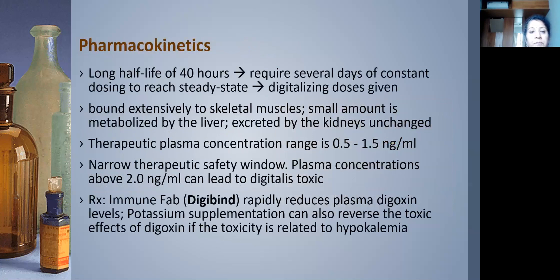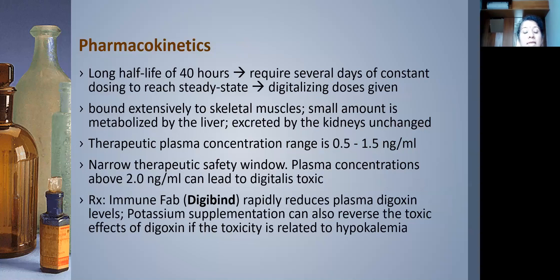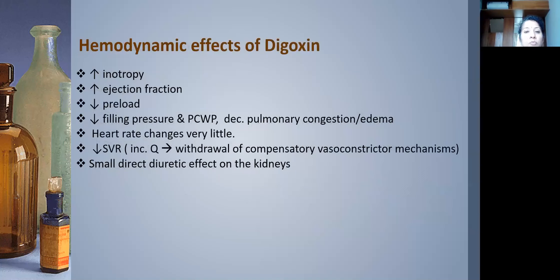Pharmacokinetics: digoxin has a long half-life, taking several days to reach steady state, which is why digitalizing doses are used when a quick steady state is needed. It is bound extensively to skeletal muscle and excreted unchanged by the kidneys. Therapeutic plasma concentration is 0.5–1.5 ng/mL. The therapeutic safety window is very narrow — above 2 ng/mL can lead to digoxin toxicity.